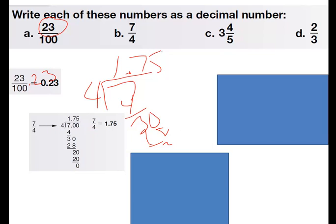On C, 3 and 4/5 into a decimal. Well, the 3 we know is going to go right out in front. And then the 4/5 is going to be 4 divided by 5, which is going to be 0.8, because 5 goes into 40 eight times. So I think that's going to be 3.8. There it is. Excellent.